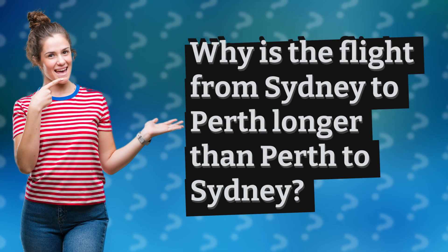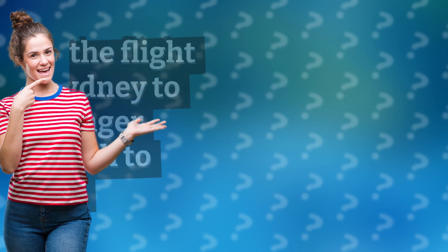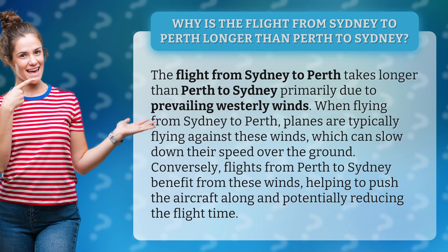Why is the flight from Sydney to Perth longer than Perth to Sydney? The flight from Sydney to Perth takes longer than Perth to Sydney primarily due to prevailing westerly winds. When flying from Sydney to Perth, planes are typically flying against these winds, which can slow down their speed over the ground. Conversely, flights from Perth to Sydney benefit from these winds, helping to push the aircraft along and potentially reducing the flight time.